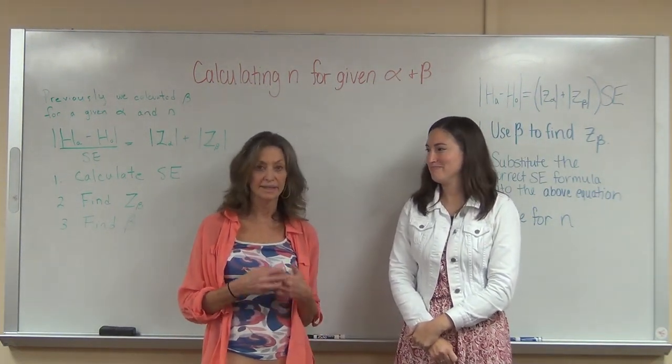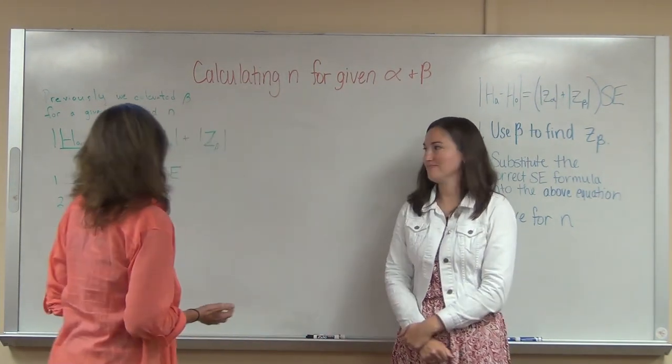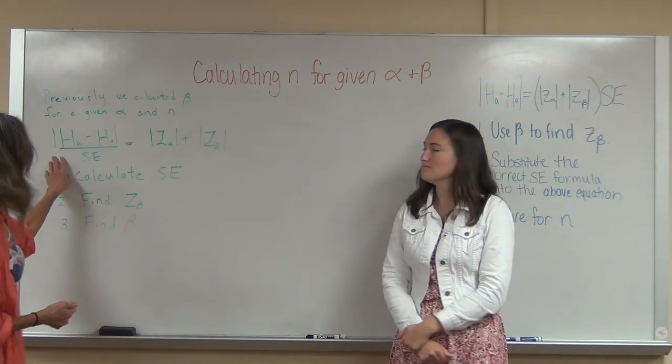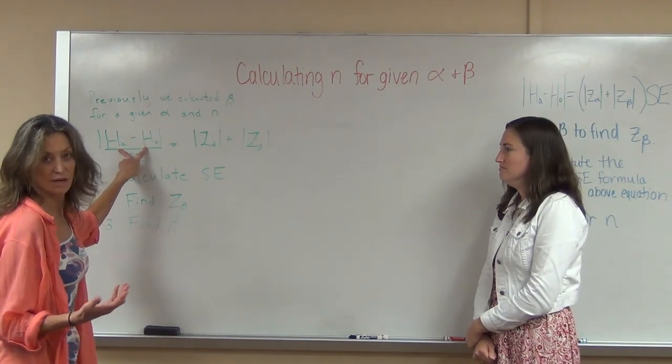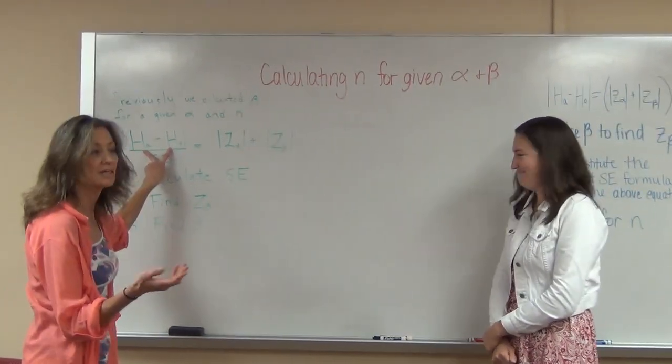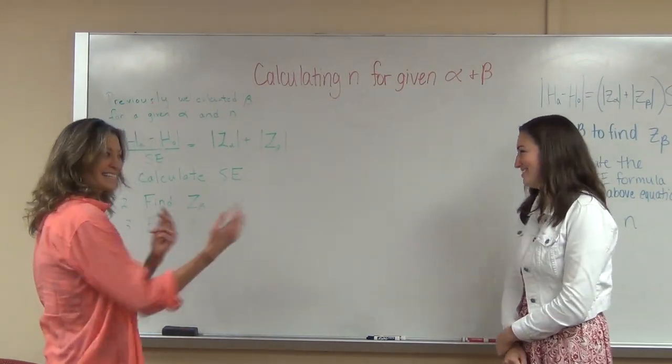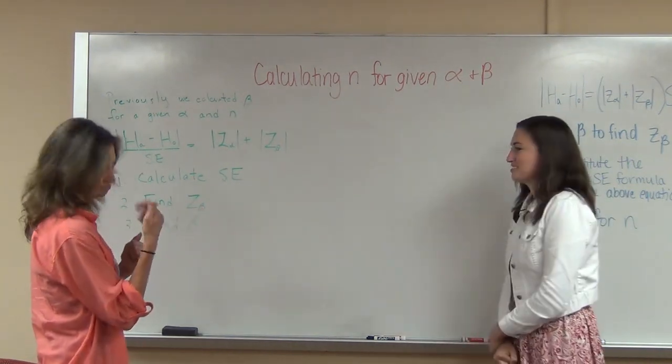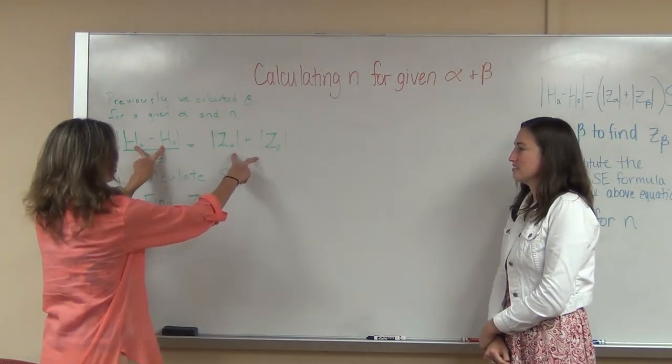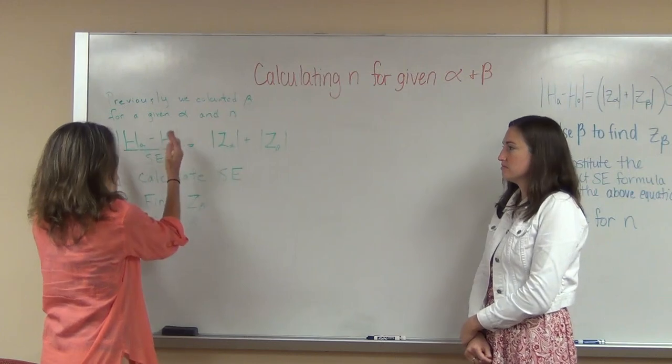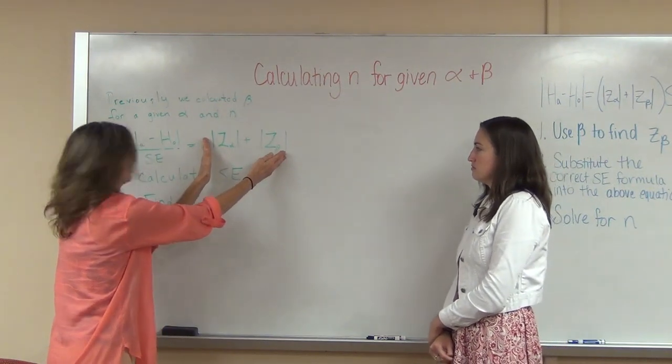Okay, so previously we calculated the size of the type 2 error given a particular sample size, and we followed these steps. What we're basically doing is translating this distance of 10% that you wanted to detect—50% just by chance, but she thinks they have more like a 60% chance. So this 10% was the effect size, and we want to translate it into a distance in z-scores.